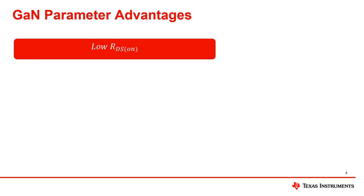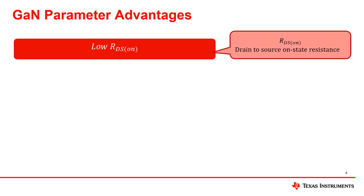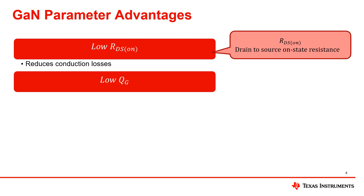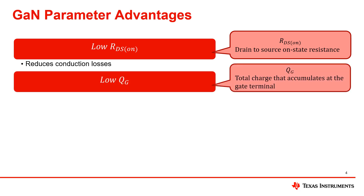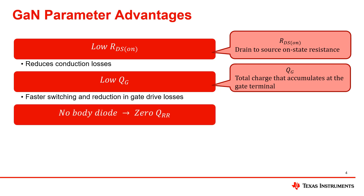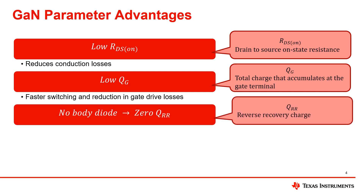Firstly, GAN transistor's RDS_on value is very low in comparison to silicon, which reduces conduction losses leading to more efficient devices. Next, when it comes to GAN its total gate charge is a lot lower, which results in faster switching and reduction in the gate drive losses. It's good to mention here that given GAN has no body diode, we also have zero reverse recovery charge and thus no reverse recovery losses.